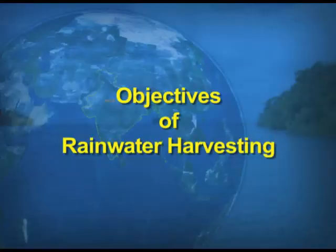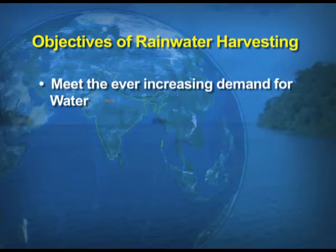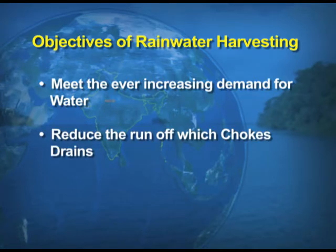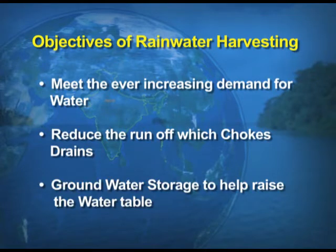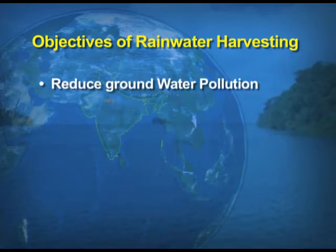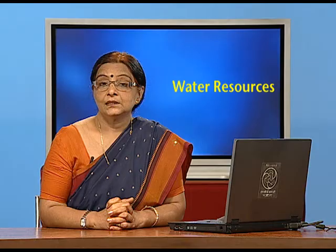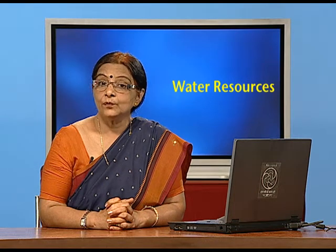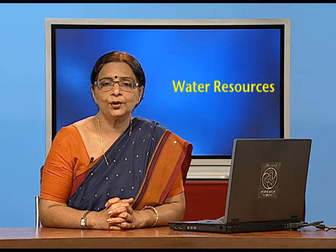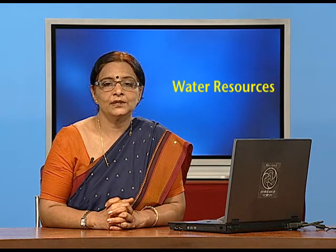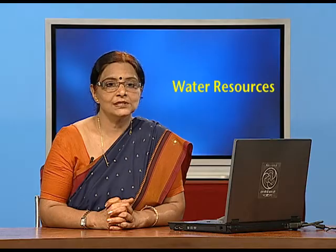The various objectives of rainwater harvesting include: to meet the ever-increasing demand for water; to reduce runoff which chokes drains; to increase groundwater storage and raise the water table; to reduce groundwater pollution; to reduce soil erosion; and to avoid flooding of roads. Besides these, rainwater harvesting will supplement domestic water requirements during summer drought seasons.